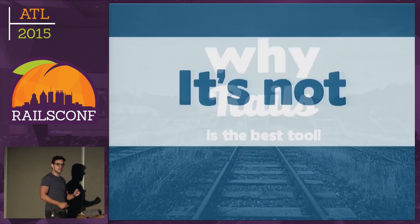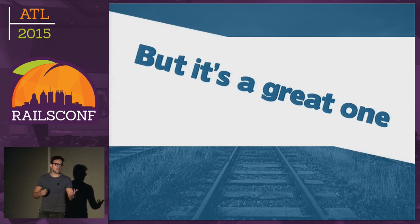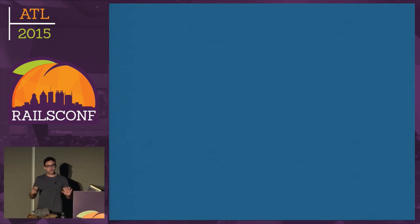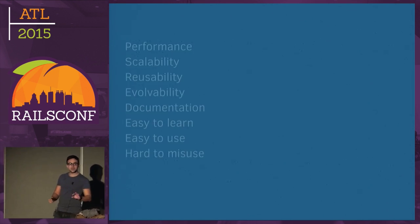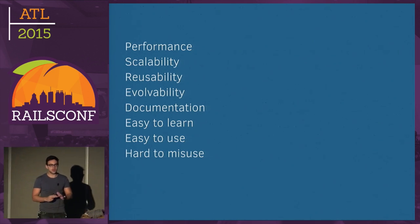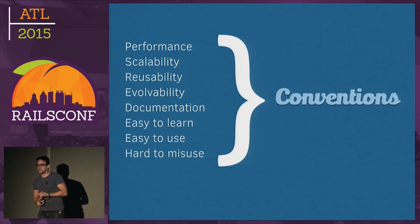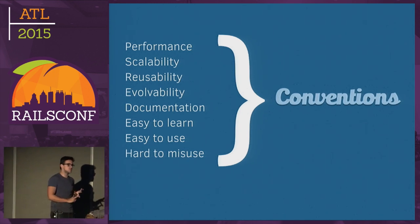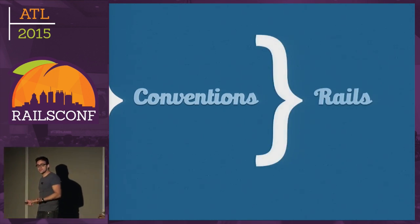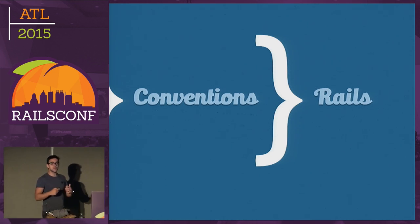I would like to talk about why Rails is a great tool to build APIs. Rails is not the only one — there are downsides — but it is a great tool. If you take a look at those eight points: performance, scalability, hard to use, hard to misuse — they are all deeply related to conventions. If you follow conventions, you probably get performance, easy documentation, easy to use, hard to misuse, and easy to scale. Conventions are deeply connected to Rails — Rails is all about conventions.